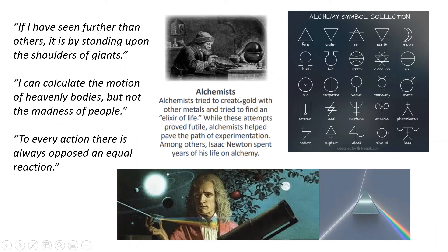Alchemists were people who tried to create gold from other metals and tried to find an elixir of life. While these attempts proved futile, alchemists helped pave the path of experimentation. Among others, Isaac Newton spent years of his life on alchemy, and if you read the book 'Women in Chemistry' you would have seen that Cleopatra was also an alchemist. Here are some alchemy symbols for fire, water, air, earth, moon, death, life, terra (earth), creation, salt, sun, Venus, Mercury, Mars, Uranus, lead, Neptune, arsenic, phosphorus, Saturn, sulfur, alkali, olive oil, and lead.